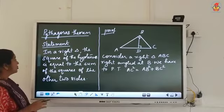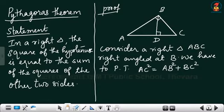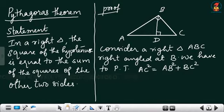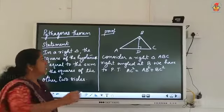The Pythagorean theorem states: in a right triangle, the square of the hypotenuse is equal to the sum of the squares of the other two sides, which you have already learned. The hypotenuse is the side opposite the 90-degree angle.